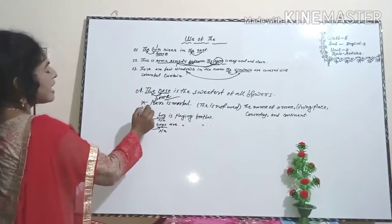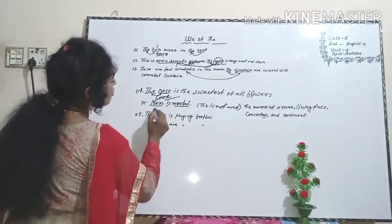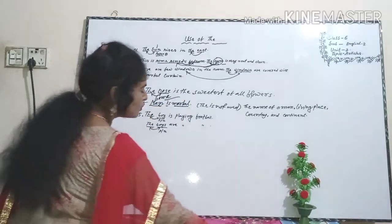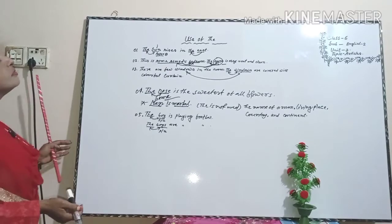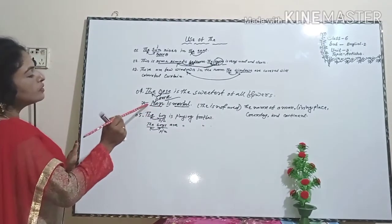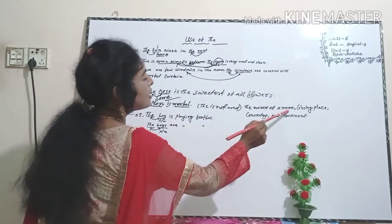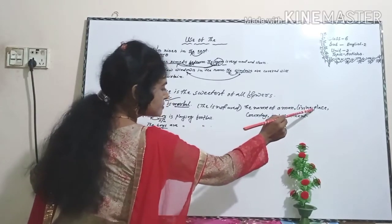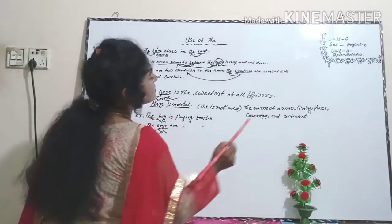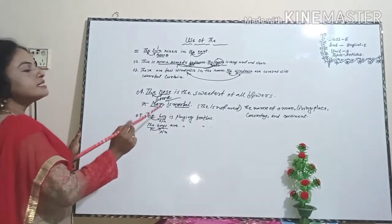Next, dear learners, here is an exception: 'Man is mortal.' Though 'man' is the same group, here 'the' is not used. The name of a man, living place — a man indicates the human group — country and continent. Dear learners, though it is the same group, here 'the' is not used.